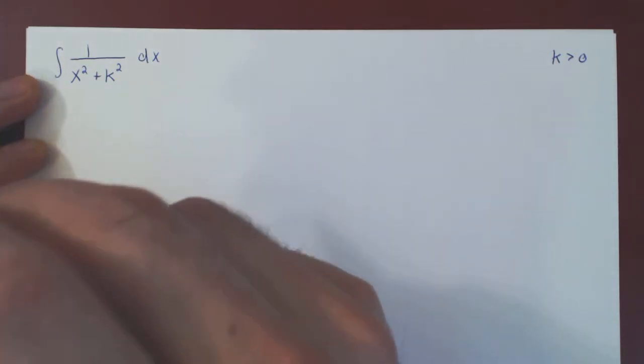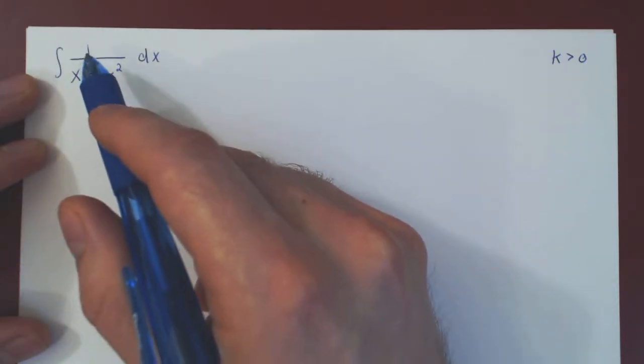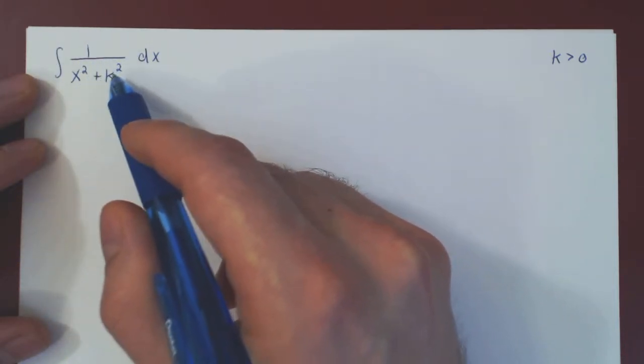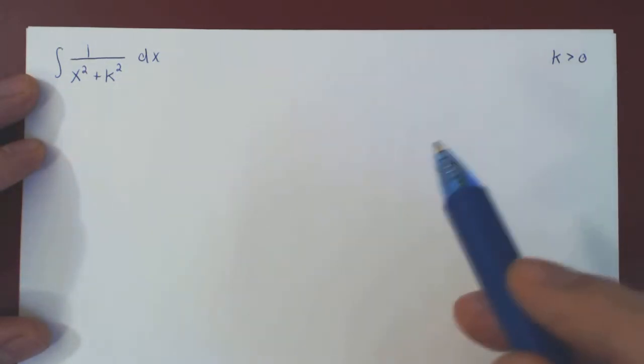Okay, so in this video, we will consider the following special integral of the form 1 over x squared plus k squared with respect to x, where k is a positive real number.